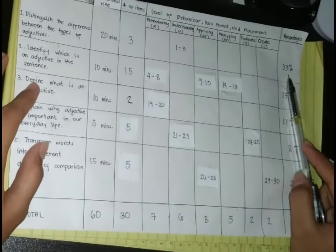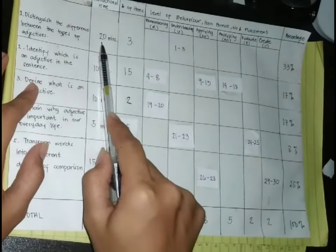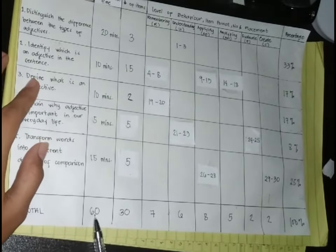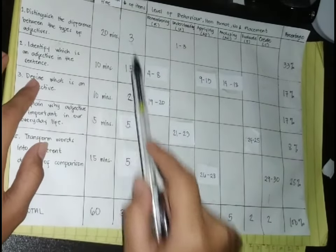To get the percentage, we have to divide the instructional time by the total of minutes and multiply it by 100%.